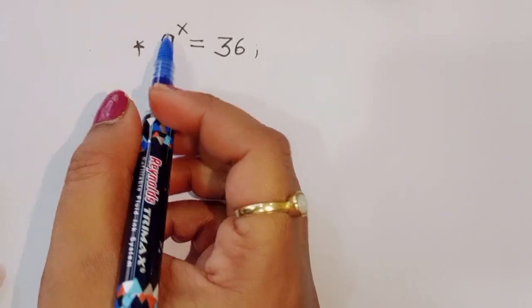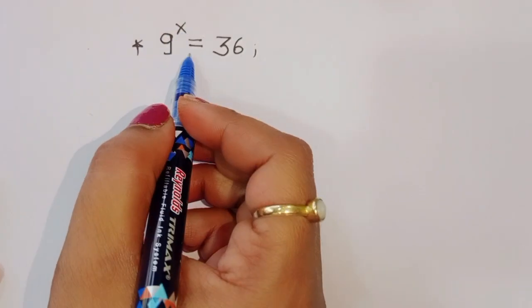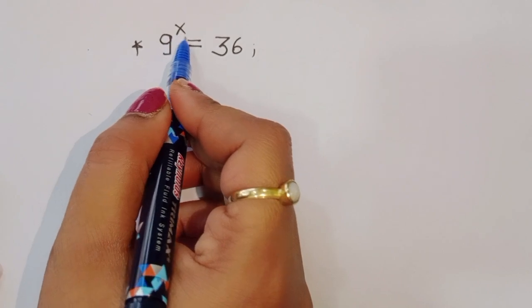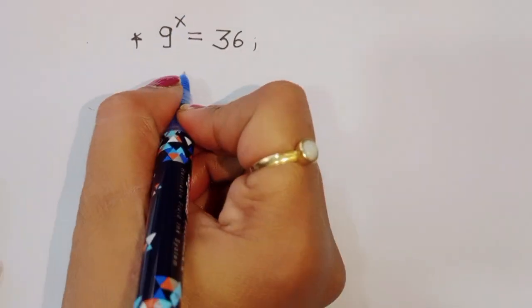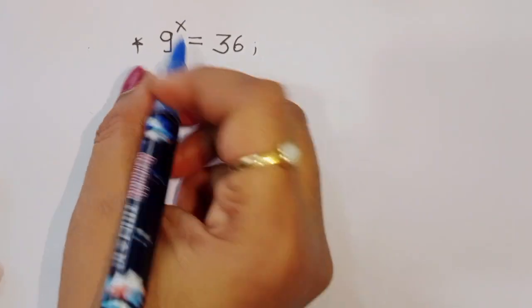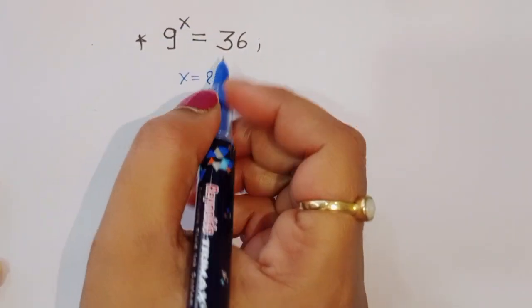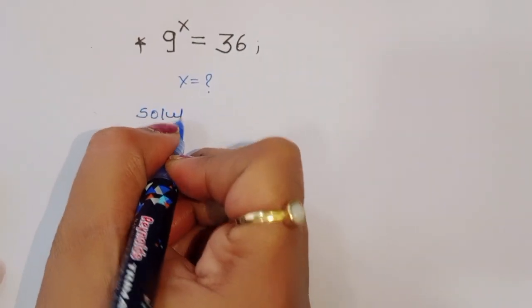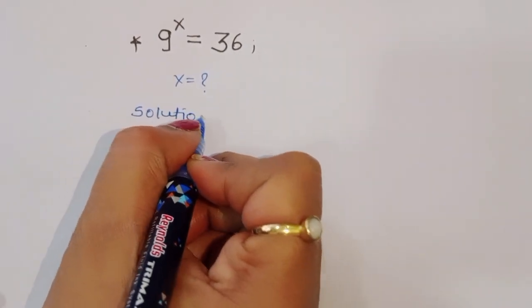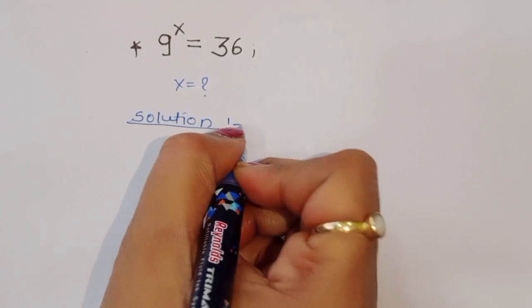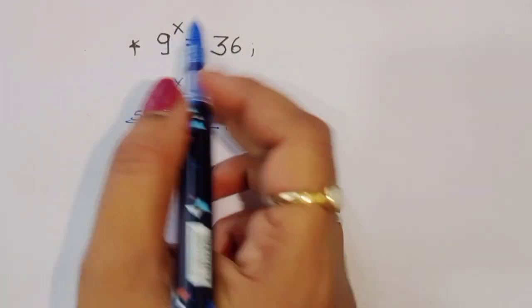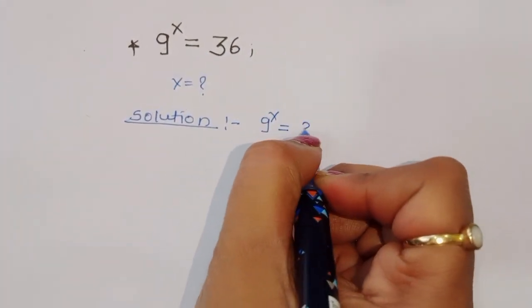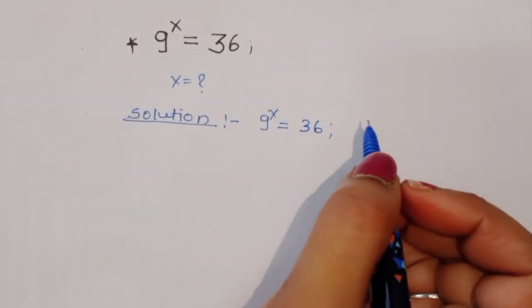The question is: given 9 power x is equal to 36, we have to find out the value of x. Let's see the solution.